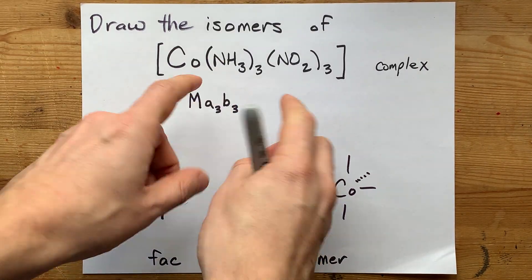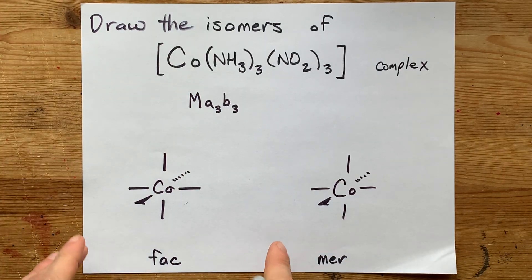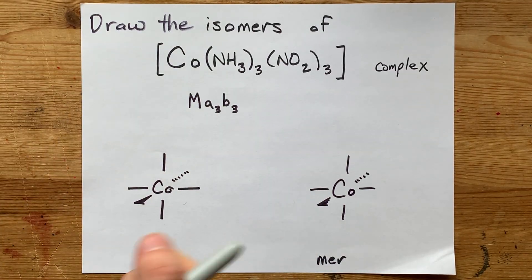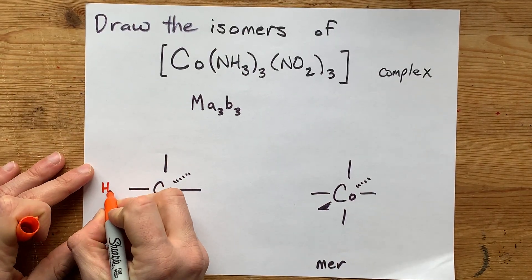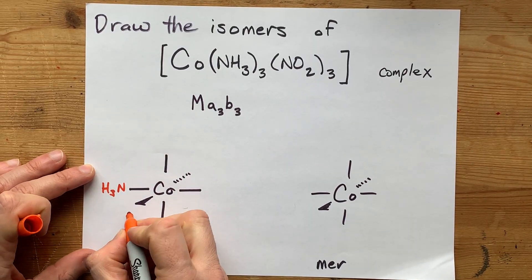I'm going to pick one of the ligands. I'm going to pick NH₃. It doesn't matter which one you pick. And for what we call the FAC, or facial isomer...